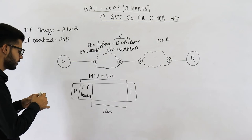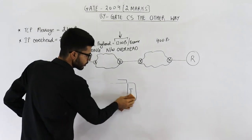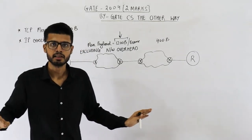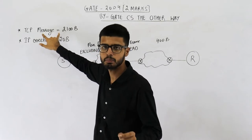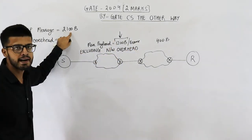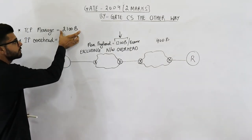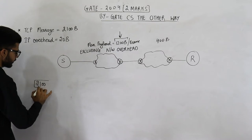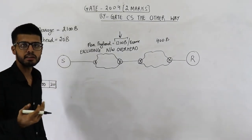Now let us start solving this question. The TCP layer sends 2100 bytes to the IP layer. Because TCP is sending this data to IP, it means TCP has already added its header. Only after adding the header does TCP send data to IP. So this 2100 bytes includes the TCP header — we need not add a TCP header separately. So message for IP is 2100 bytes. IP will add its own header of 20 bytes, so the total becomes 2120 bytes.